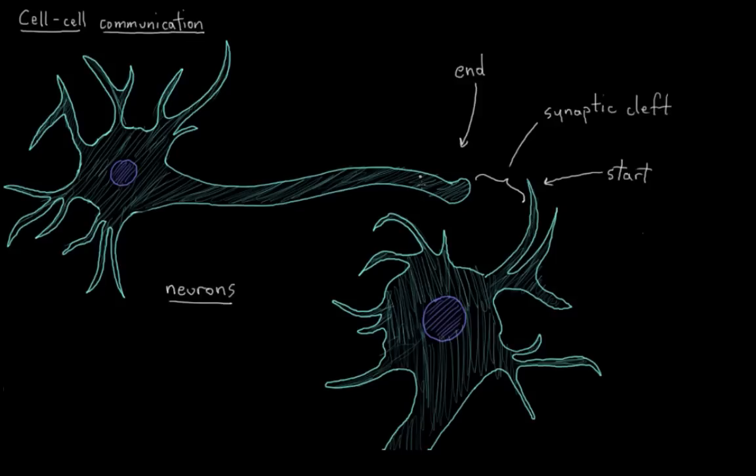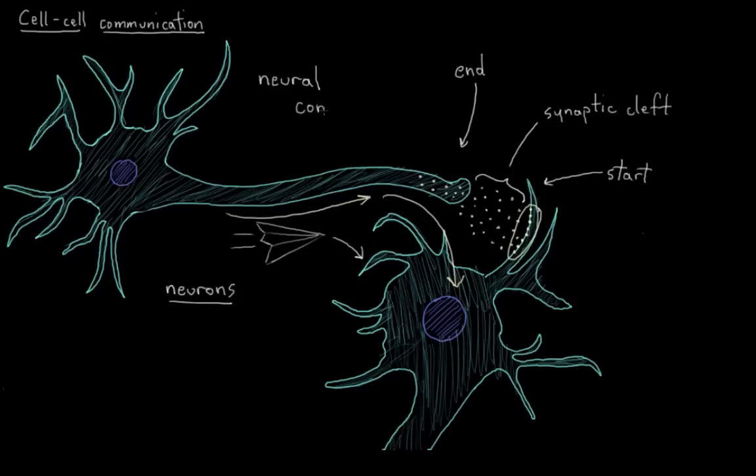So what neurons do is they release little signals called neurotransmitters to communicate with each other. So neurotransmitters get released from the end of this neuron, and they'll diffuse across this little distance here until they bind onto one of the dendrites of this next neuron. And that effectively passes the message on from this neuron to this next neuron. The paper airplane is thrown from here to here, and this is called neural communication.